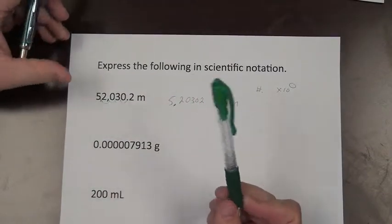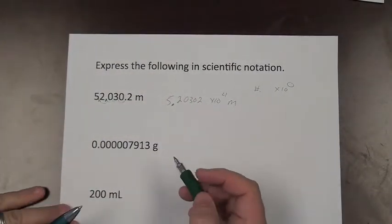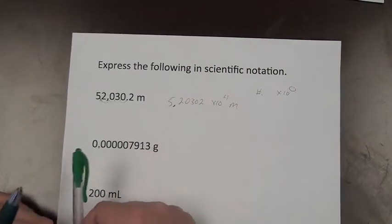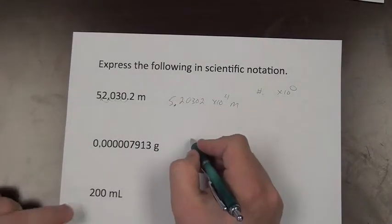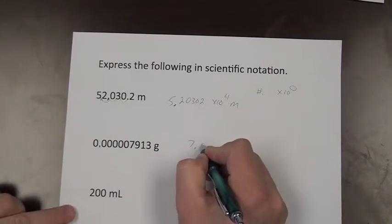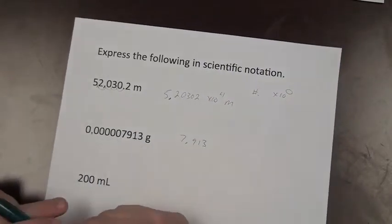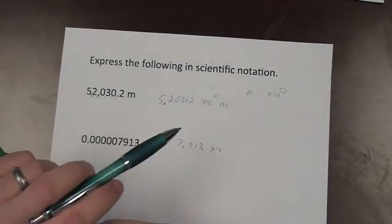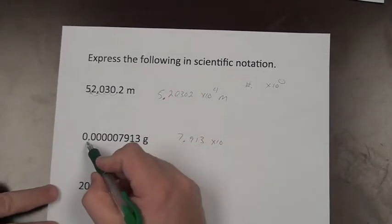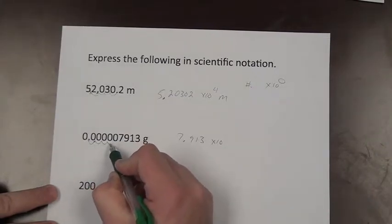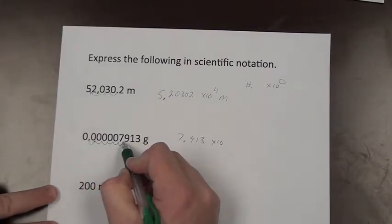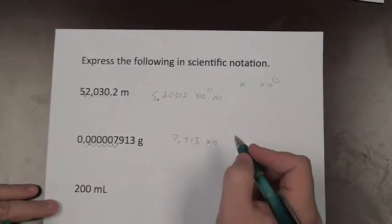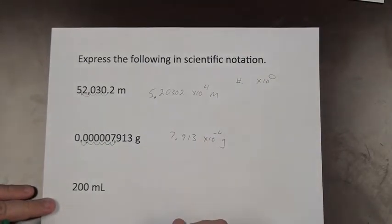For the next number, we move the decimal to the right instead. All those digits stay, giving us 7.913, and we move the decimal 1, 2, 3, 4, 5, 6 places to the right. So this becomes 7.913 times 10 to the negative 6th grams.